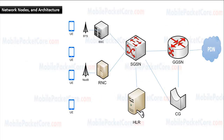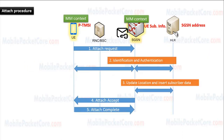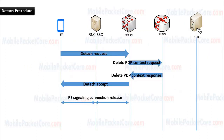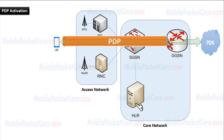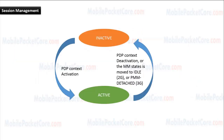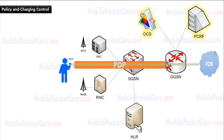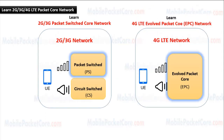In the second course — Learn 2G/3G Packet Switched Core Network — you will learn network nodes and architecture of the 2G/3G packet switched core network, network interfaces, and basic procedures including attach and detach, PDP activation, modification and deactivation, routing area update, paging and service request, different session management and mobility management states, and policy and charging control fundamentals. I hope this course bundle will be great for you. Let's start learning.